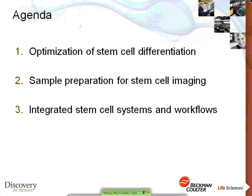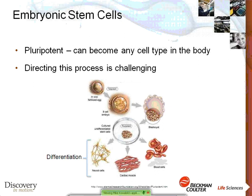Thanks, Grisha, for the introduction. I'll be talking about some of the work we've done to optimize stem cell culture and differentiation using both automation and imaging. The talk is in three parts: first, optimization of mouse embryonic stem cell differentiation; second, a sample preparation system for stem cell imaging; and third, larger integrated automated stem cell systems for more complex workflows. Stem cells are interesting because they're pluripotent and can become any cell type in the body. However, directing differentiation — for example, into cardiomyocytes — is very challenging.